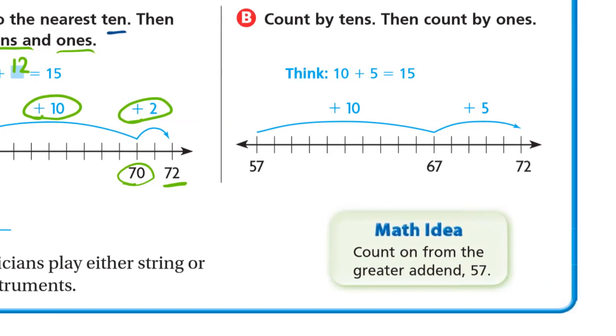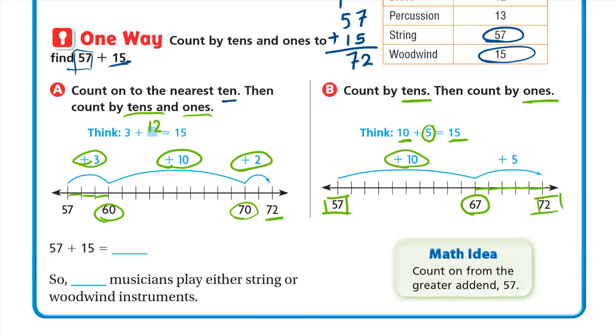Or the other way. We will count by tens first. Then we will count by ones. So from the 57 we always start from the bigger number. From the 57 we will add 10. So we will get 67. And after 67 we will count how much more. We added 10. So 10 plus 5 is 15. So we need to add 5 more. So after 67, 68, 69, 70, 71, 72. So our answer is 72. So 57 plus 15 is 72.